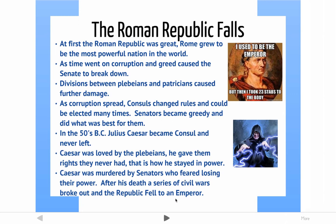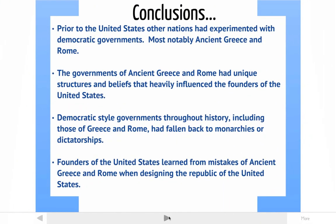Caesar took 23 stabs to the body. After his death, there was a power void in Rome, and a series of civil wars broke out. There was no longer a Roman republic, but an empire where an emperor was in charge. So to recap: prior to the United States, other governments had experimented with democracy — ancient Greece and Rome were two of them. The governments of ancient Greece and Rome had unique structures and beliefs, and our founding fathers got many ideas from them about how to run a government. However, these ancient governments eventually fell apart. The founding fathers learned from those mistakes, and when they created the Constitution, they put things into our government to prevent the same problems from happening in the United States.